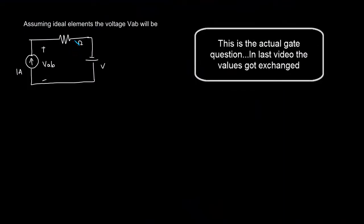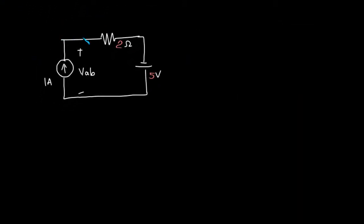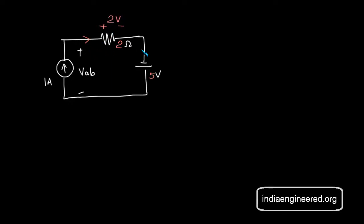We have a 2 ohm resistor and 5 volts here. When 1 ampere current flows through the 2 ohm resistor, the voltage developed across it will be 2 volts with the given polarity.